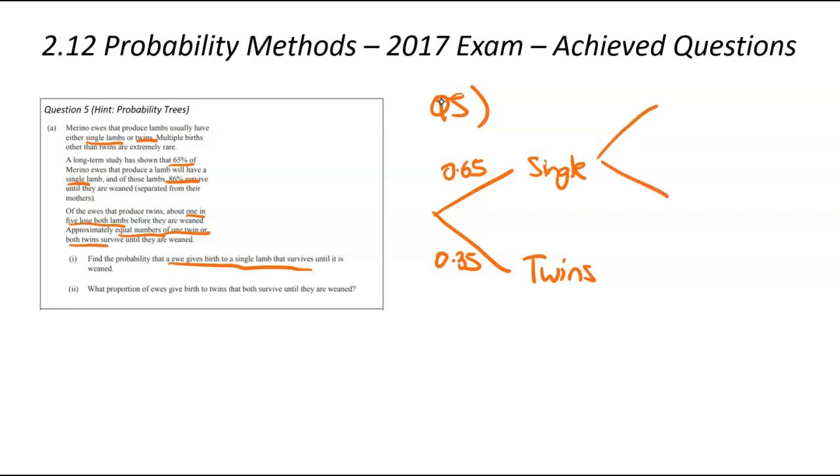The next thing we need to look at, single births. This one's nice and easy. Did survive is the first option. And unfortunately, the sad one did not survive. We got the single lambs up here, and they were said 86% of them were surviving. So 0.86, which means it did not survive, 0.14.